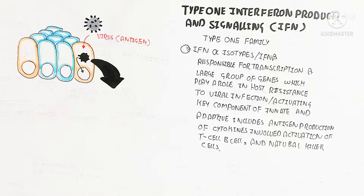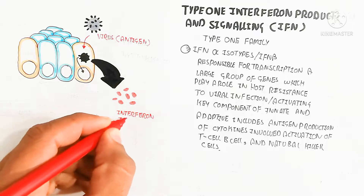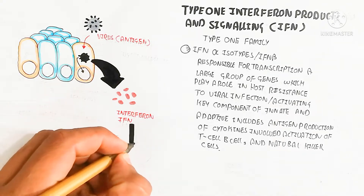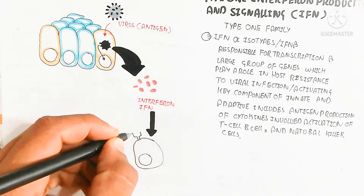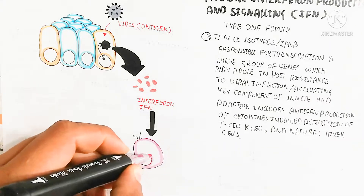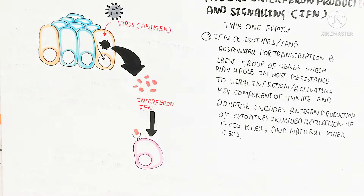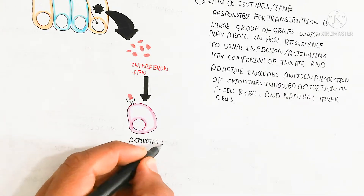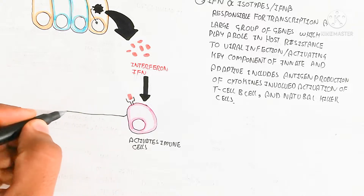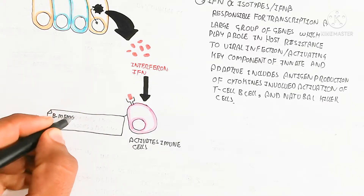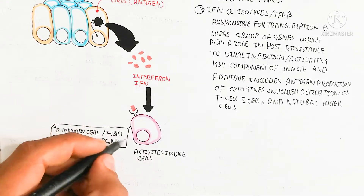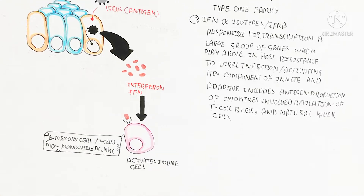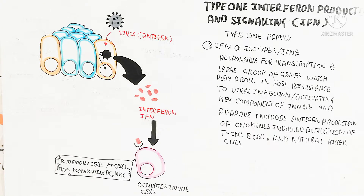After this activation of immune cells, the B memory cell, T cell, macrophage, monocyte, dendritic cell, and natural killer cell will be activated. For example, the natural killer cell will be activated to kill the infected cell. On the other hand, the CD4 T helper cell will be detected through antigen-presenting cells, and after this detection, the CD8 cytotoxic T cell will be activated to kill by enzymatic activity.